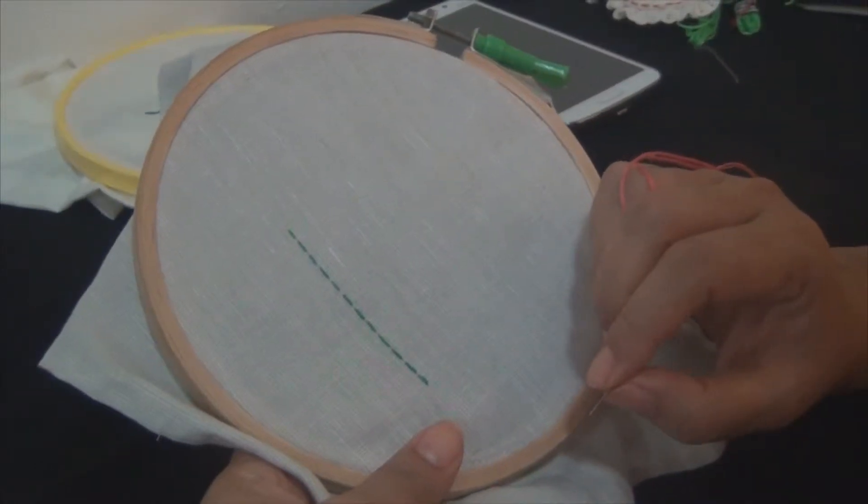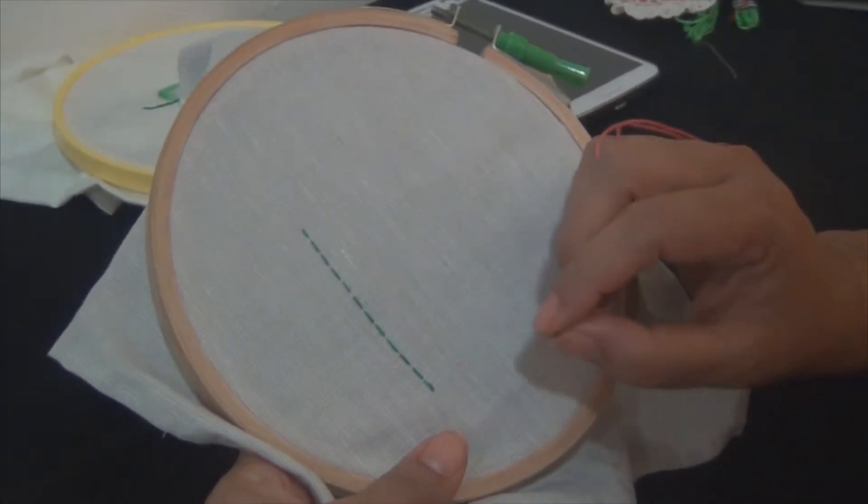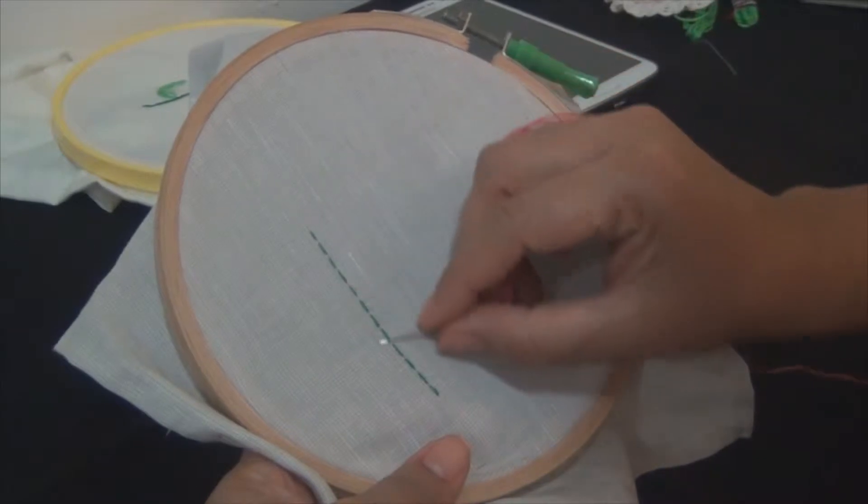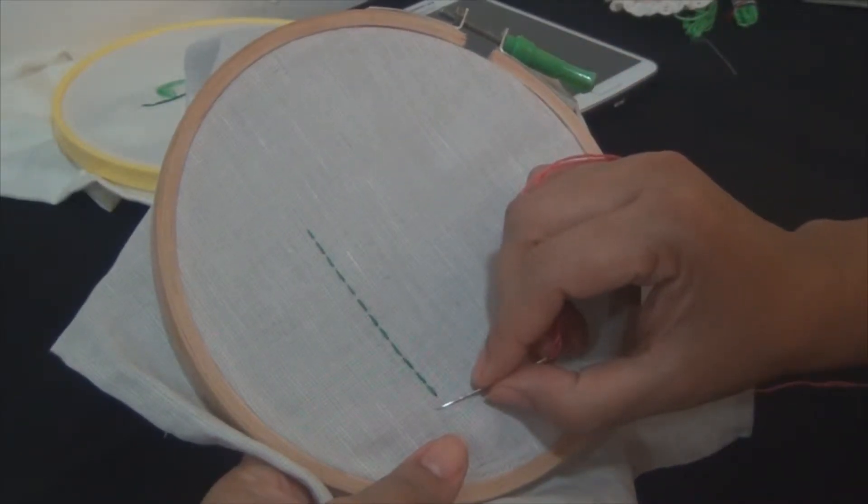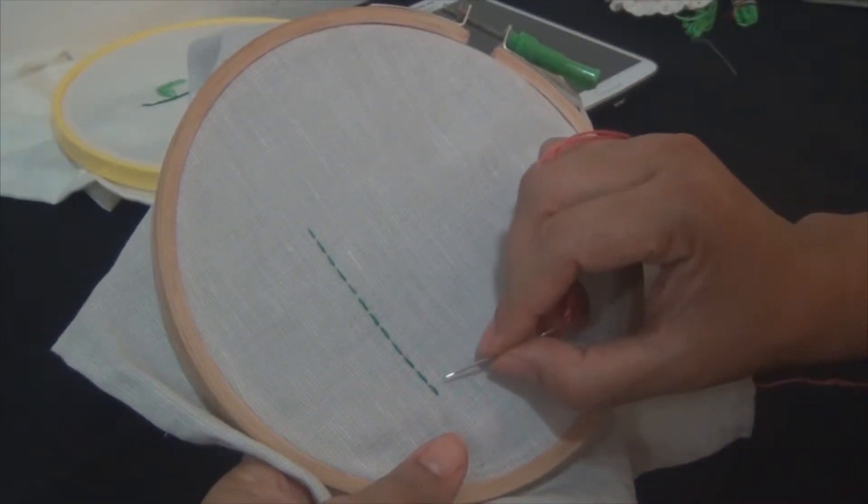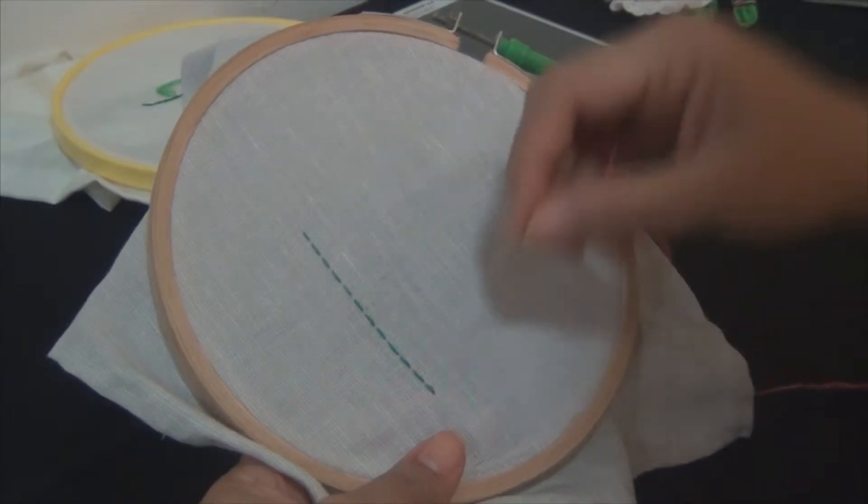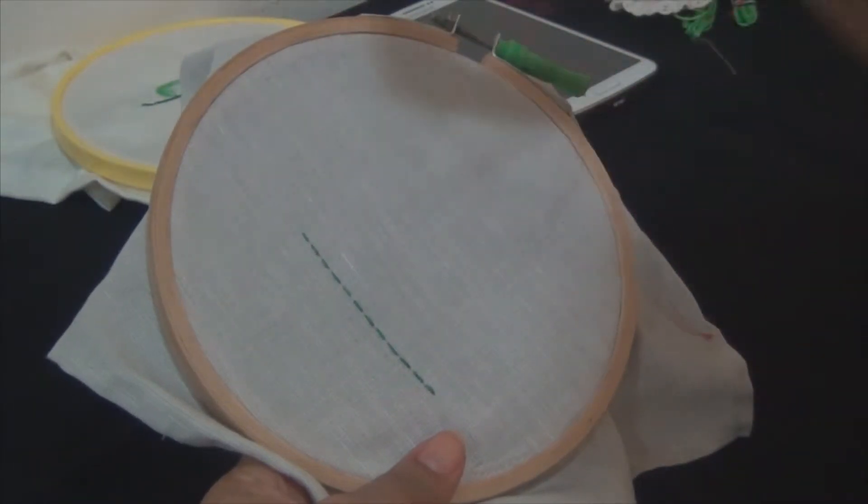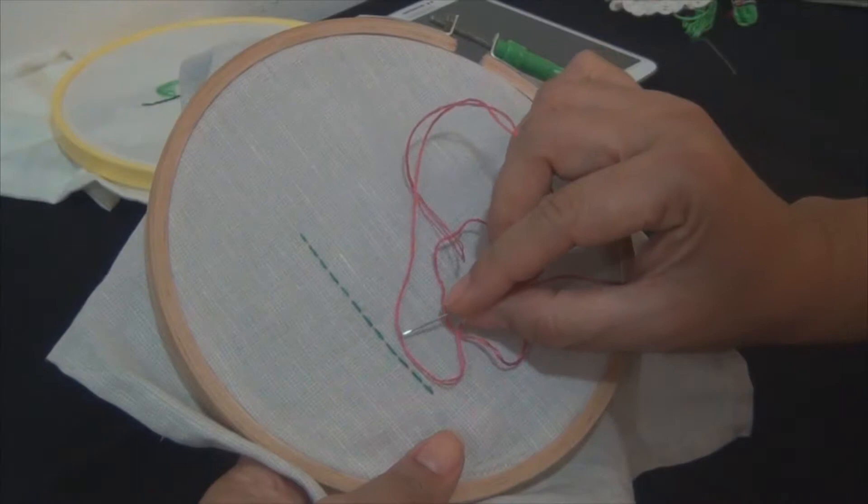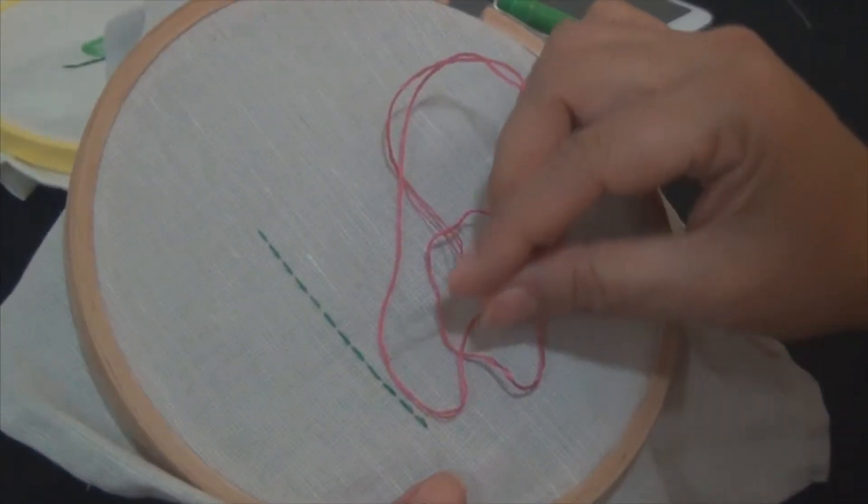Hello friends. In our last video, we learned how to do the running stitch. Today we will do a variation which is called Whipped Running Stitch. For this we will take the thread in contrast color and let's begin.